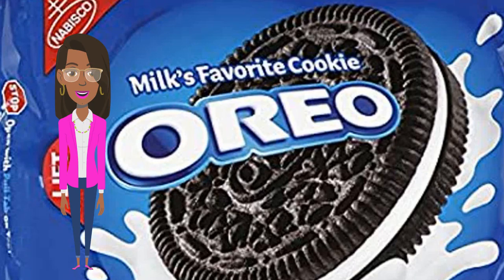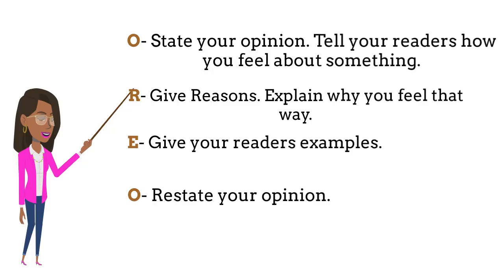When writing an opinion piece, we use a strategy known as the Oreo method. In the acronym Oreo: the O means state your opinion — tell your readers how you feel about something. R means give reasons — explain why you feel that way. E means give your readers examples. Finally, the O means restate your opinion.